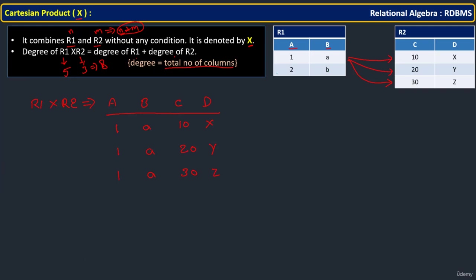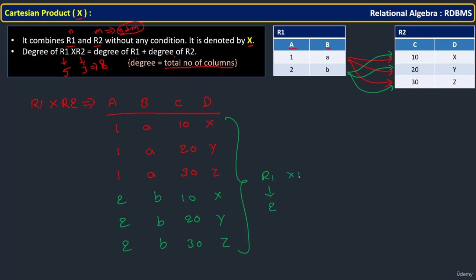The same process applies to the second row. So 2B combines with 10X, then 2B with 20Y, and then 2B with 30Z. In R1 we have 2 rows and in R2 we have 3 rows, giving a total of 6 rows — all possible combinations generated.